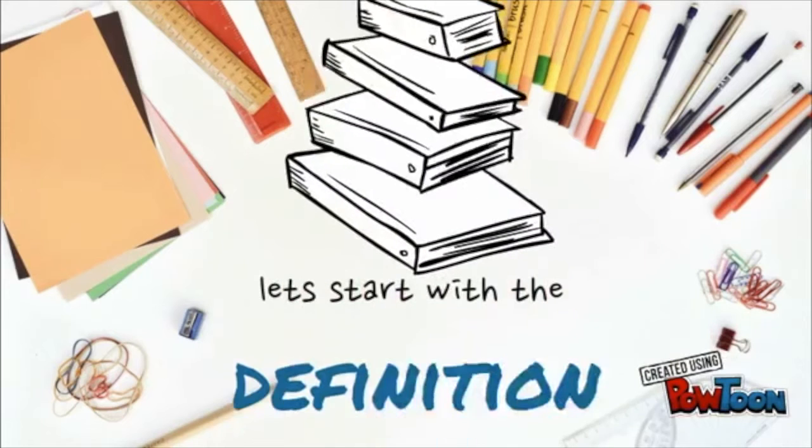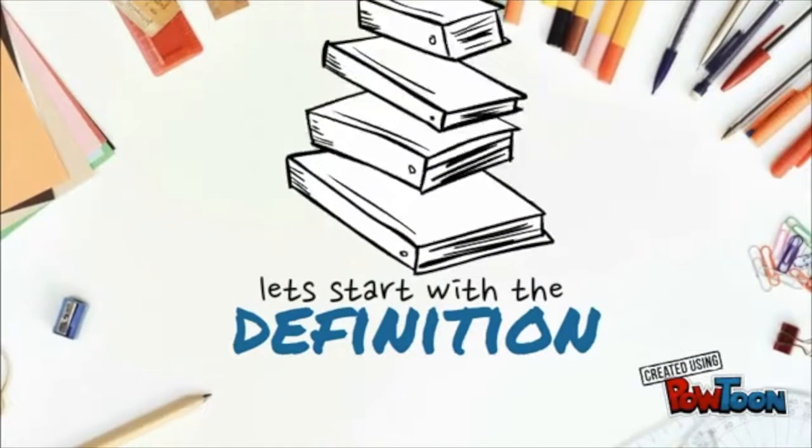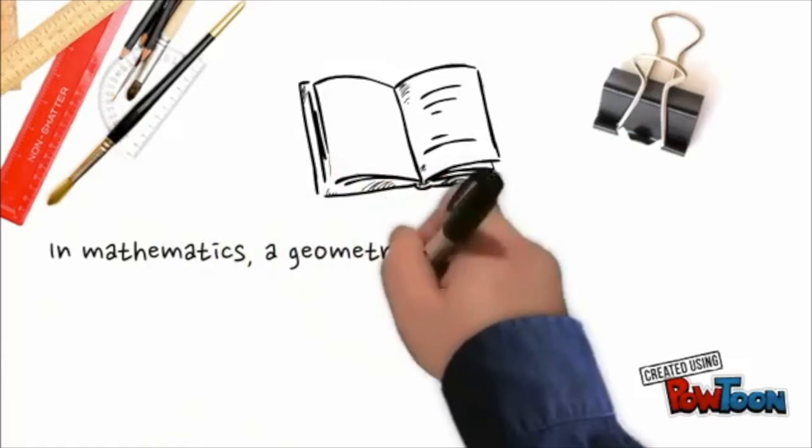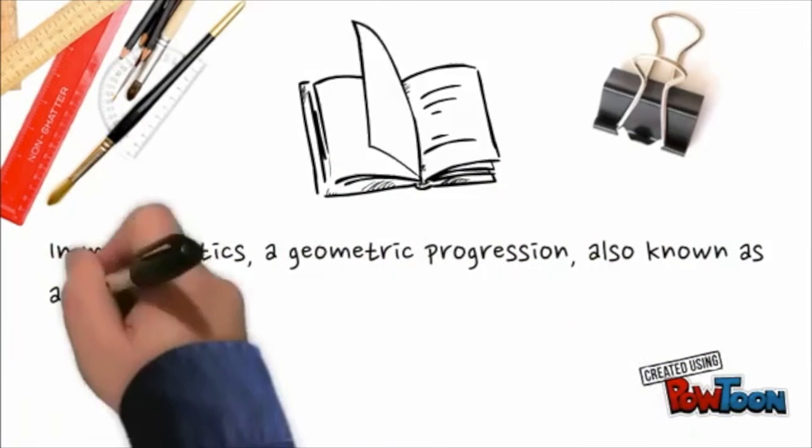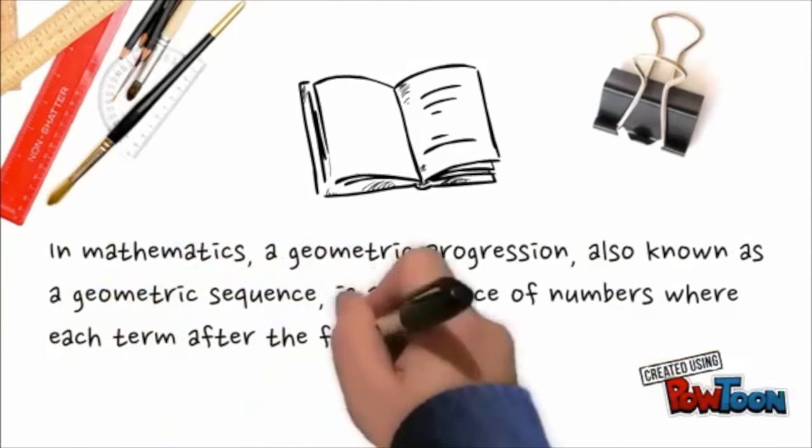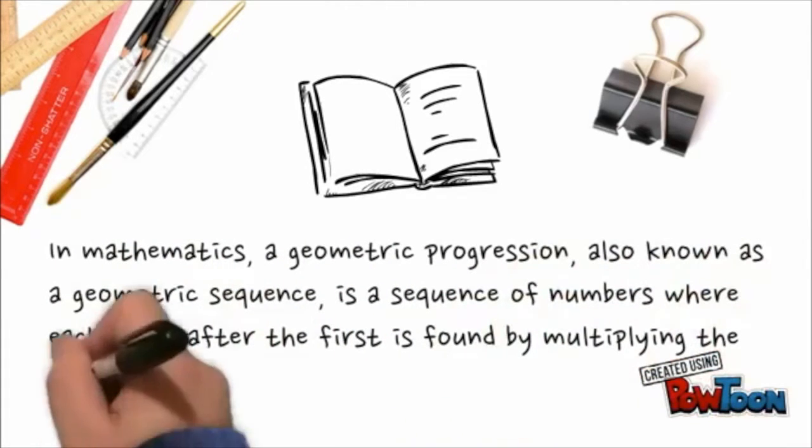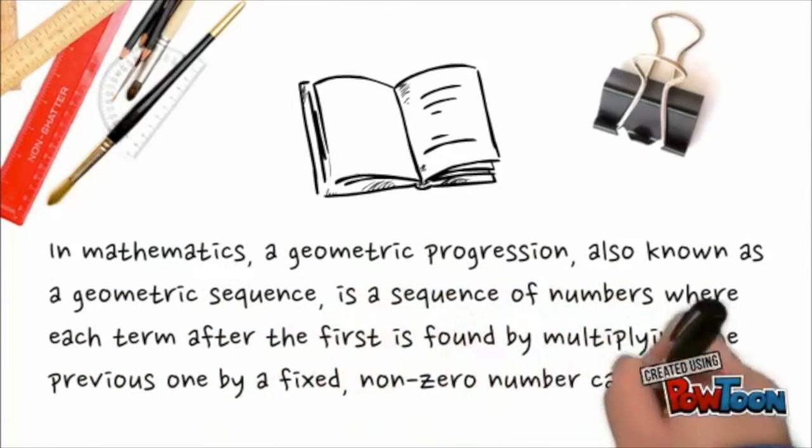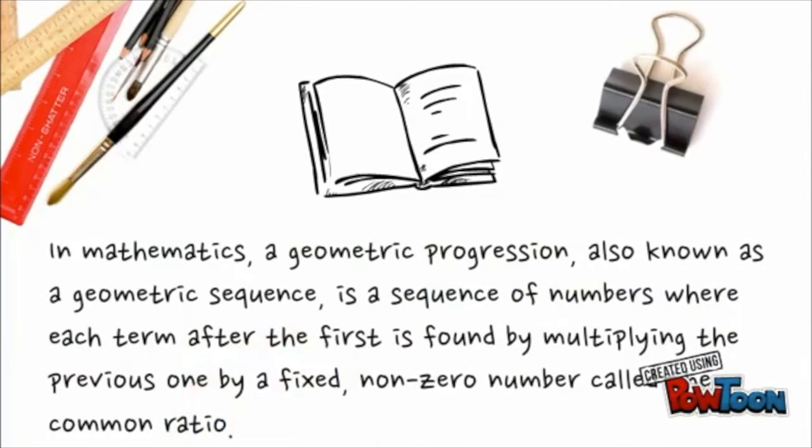Let's start with the definition. In mathematics, a geometric progression, also known as a geometric sequence, is a sequence of numbers where each term after the first is found by multiplying the previous one by a fixed, non-zero number called the common ratio.